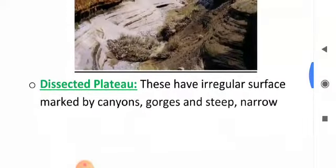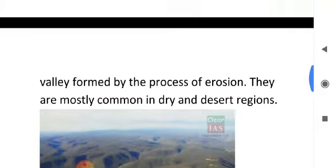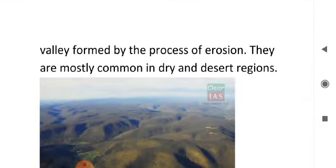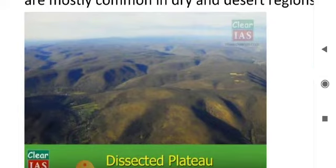Dissected plateau. This type of plateau has an irregular surface pattern marked by canyons and gorges — a new term meaning narrow steep valleys formed by the erosional work of a river. Look at the picture: the land is totally dissected.